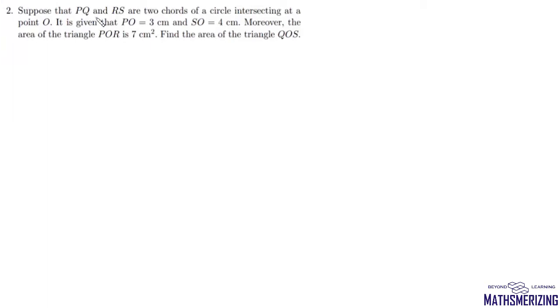Question number two says: suppose that PQ and RS are two chords of a circle intersecting at a point O. It is given that PO is 3 cm and SO is 4 cm. Moreover, the area of triangle POR is 7 cm². We need to find the area of triangle QOS.